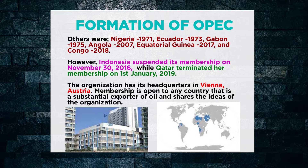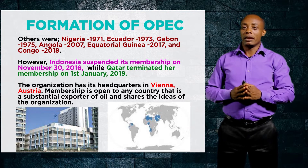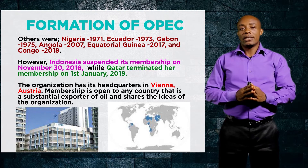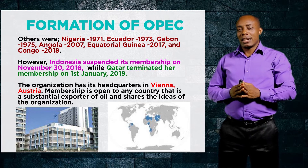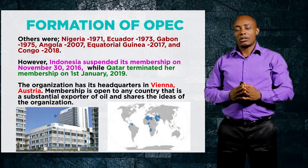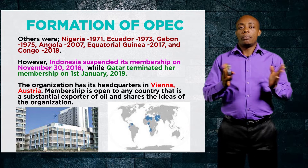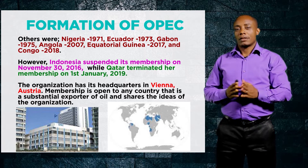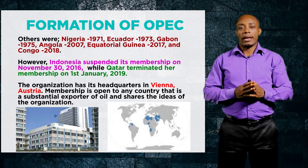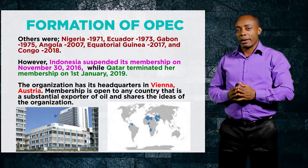However, Indonesia suspended her membership from the organization on 30th November 2016. Qatar also terminated her membership in January 2019, making Qatar the only oil-producing country to have joined and finally withdrawn from OPEC. It is important to note that other oil-producing countries like the United States and Russia are not members of OPEC. The headquarters of OPEC is located in Vienna, Austria, as shown on screen.